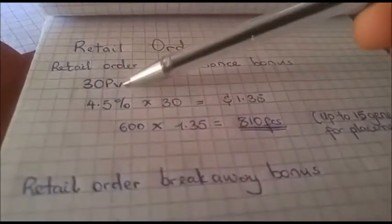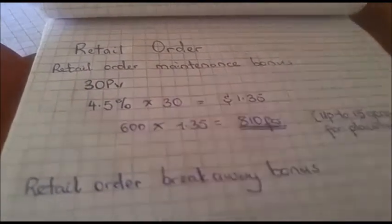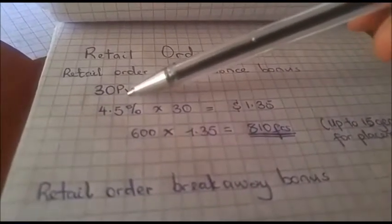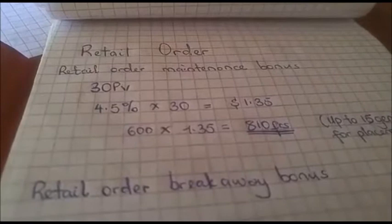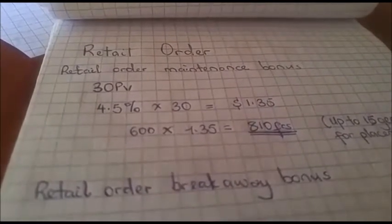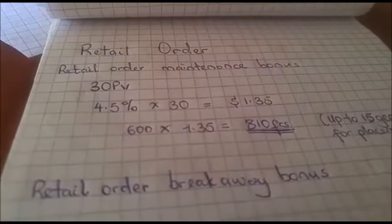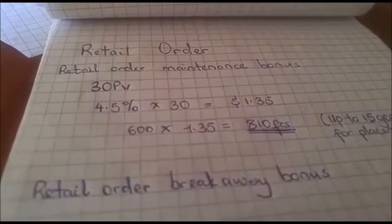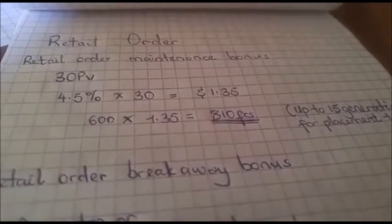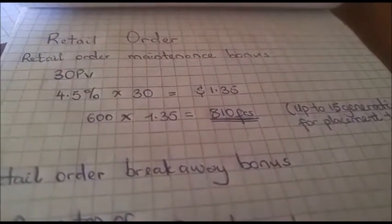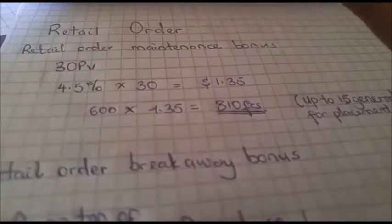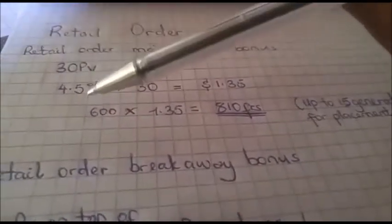Now retail order. Every month the company says do a retail order of 30 PV, 30 PV and above, at least 30 PV. Why? Because when you do that, purchasing 30 PV and above on a monthly basis, it qualifies you for four different bonuses. We are going to take time to go through those four different bonuses.